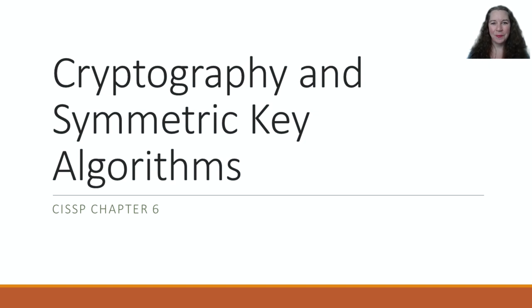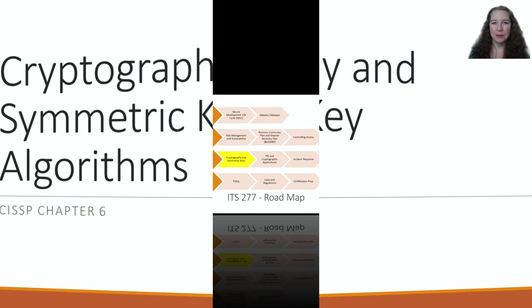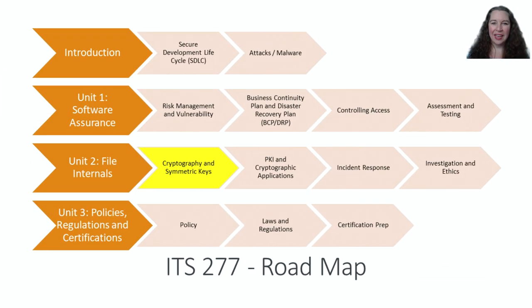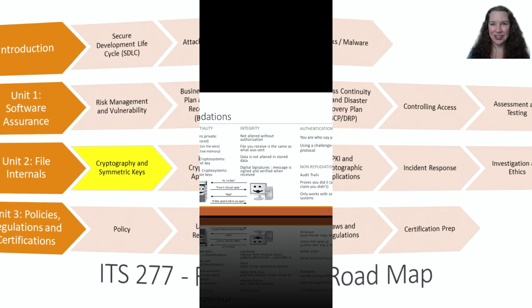Hi, and welcome back. In this lesson, we're going to be covering the CISSP Chapter 6 on cryptography and symmetric key algorithms. If you're following along with our class schedule, we're going to start getting into file internals with cryptography, incident response, and some ethics and investigation in this unit. Starting out the unit, we're going to be discussing symmetric keys, followed by PKI and some applications and asymmetric keys. Let's get started.